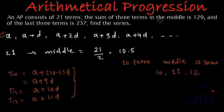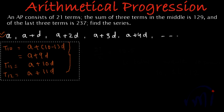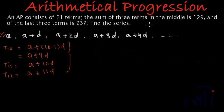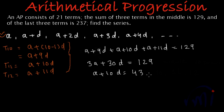We are told the sum of the three middle terms is 129. So (a + 9d) + (a + 10d) + (a + 11d) = 129, which gives us 3a + 30d = 129. Dividing the whole equation by 3, we get a + 10d = 43. Let's call this Equation 1.